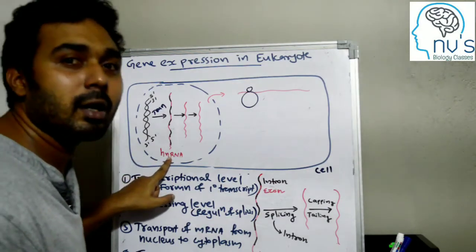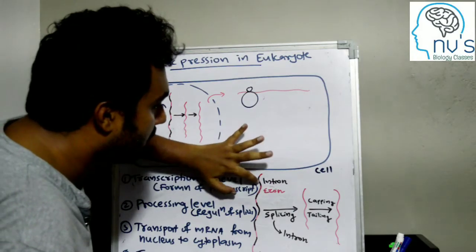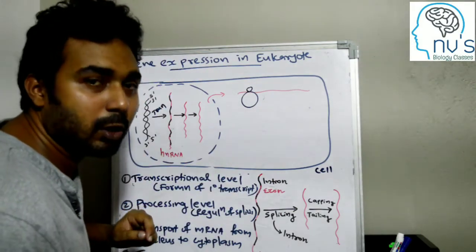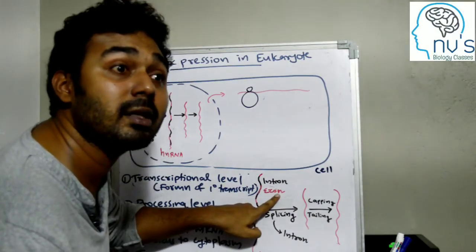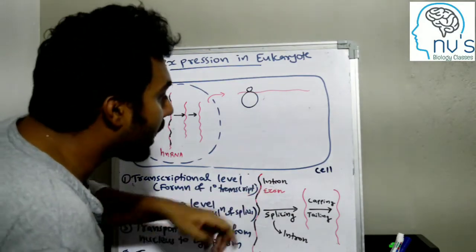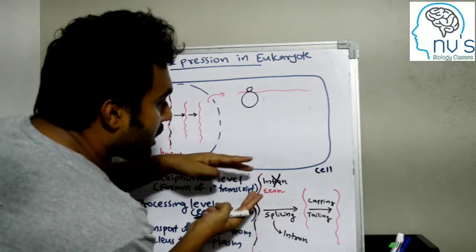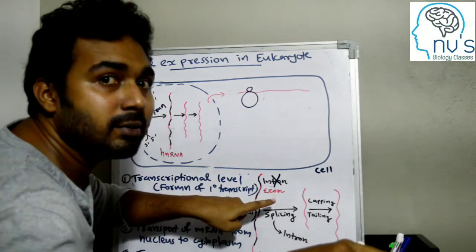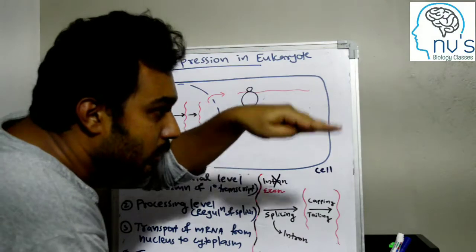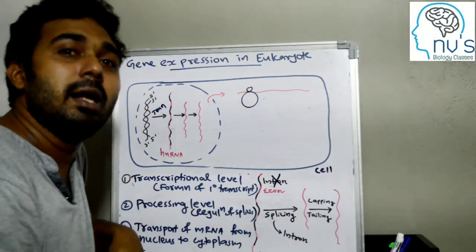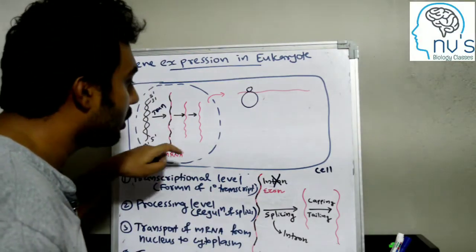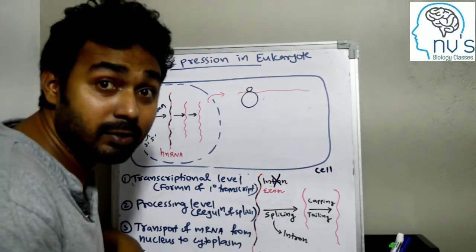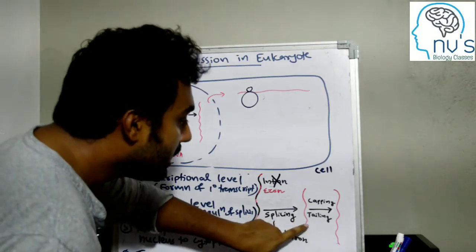Why do we say Heterogeneous Nuclear RNA? The hnRNA contains exons and introns. Exons are the coding sequences and introns are the non-coding sequences. The introns are removed and the exons are joined together using RNA ligase — this process is called splicing.